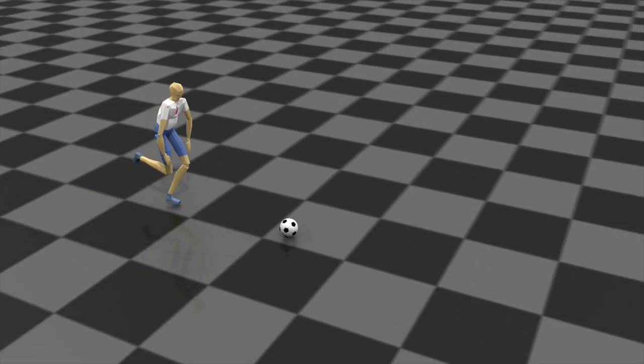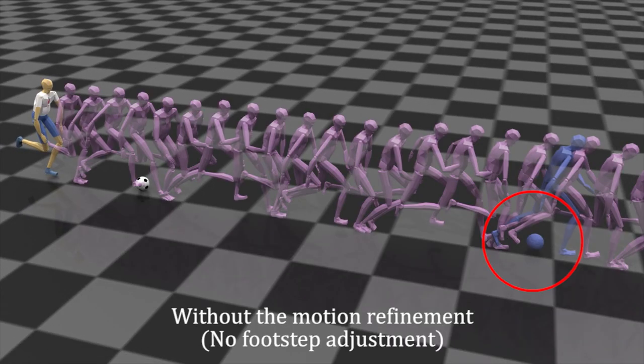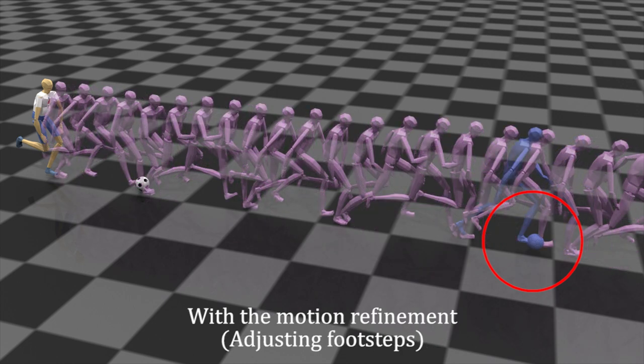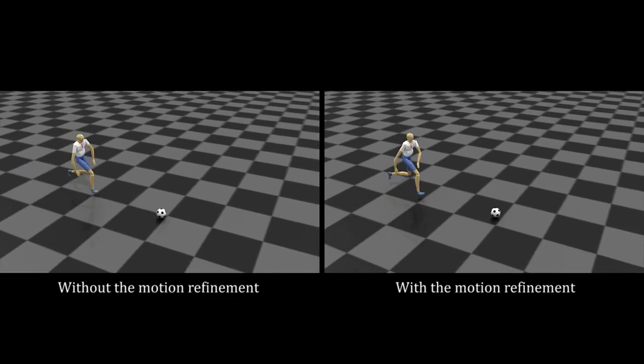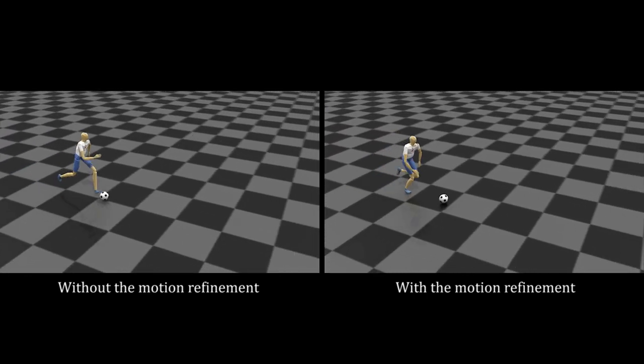Effect of the motion refinement. Without the motion refinement, the kick pose does not match the simulated ball position. The system refines the reference motion for the character to kick the ball at the right time and position. Here is the comparison of the results with and without the motion refinement.